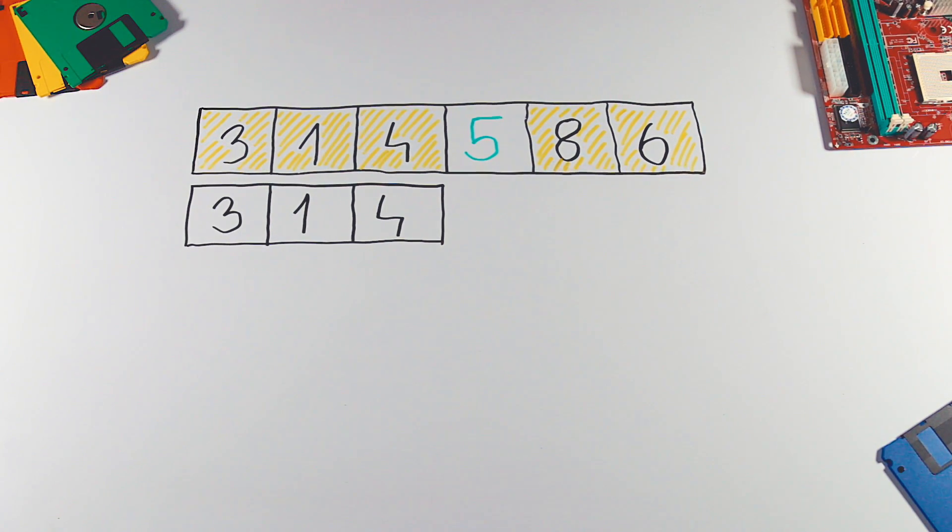Same as before, we choose a pivot and compare it with other elements. But this time there are no bigger elements, so no swapping is needed.